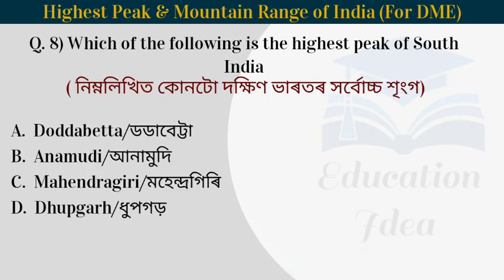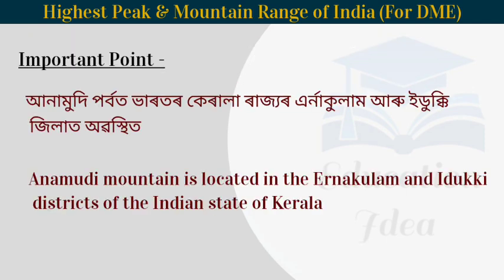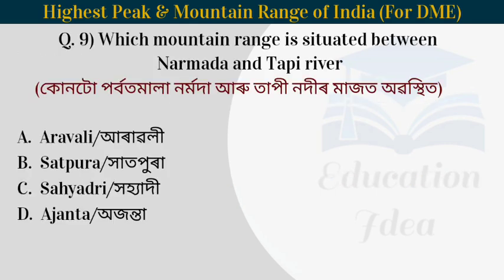Next question: which of the following is the highest peak of South India? The answer is Anamudi. Anamudi mountain is located in the Ernakulam and Idukki districts of the Indian state of Kerala.